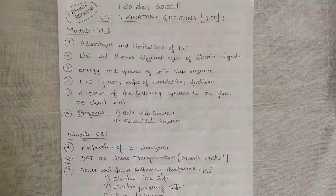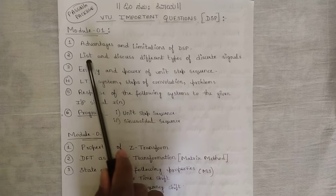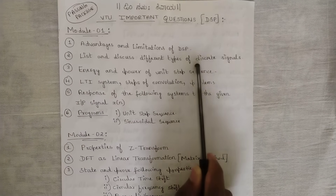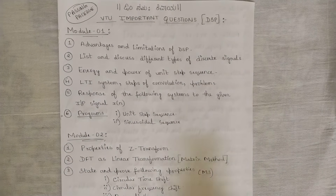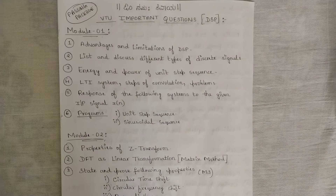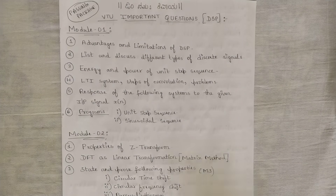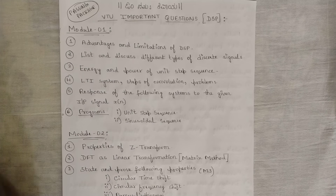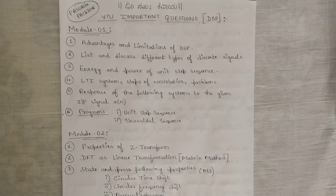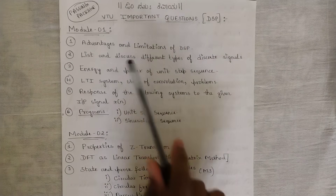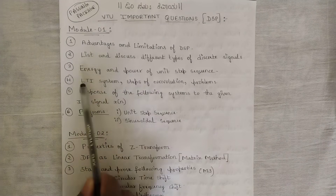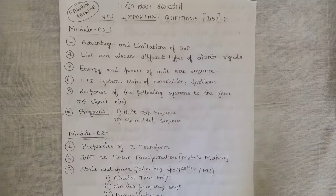The next question is to discuss different types of discrete time signals. They might also ask about different types of continuous time signals, but discrete time signals have appeared a lot in previous year question papers. You should cover even and odd signals, periodic and aperiodic signals, and other kinds of signals, and make a list along with their graphs. There are high chances they might ask this in module one.